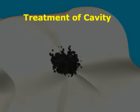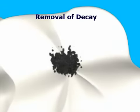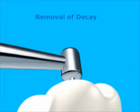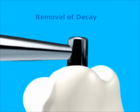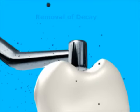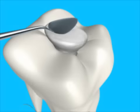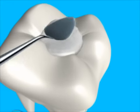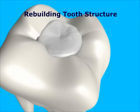Treatment of a cavity generally consists of two steps: removing the decayed portion of the tooth, and rebuilding the missing tooth structure with a suitable filling material. Under local anesthesia, a high-speed dental drill is used to remove the decay and prepare the tooth for the filling.